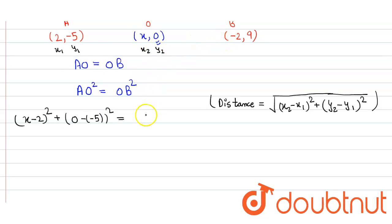So similarly we apply the formula here. So here we take (x-(-2))² plus (0-9)².